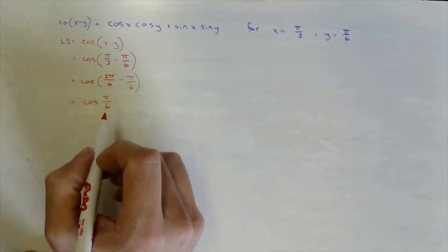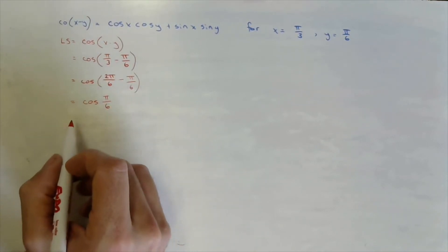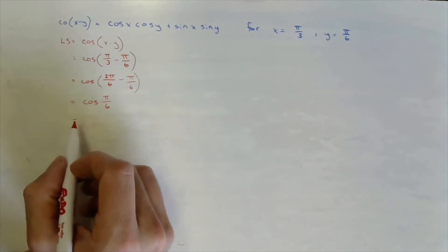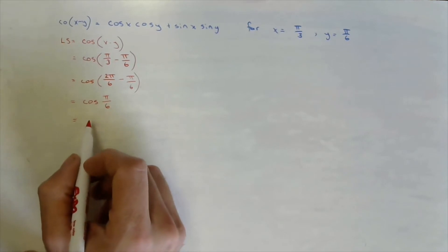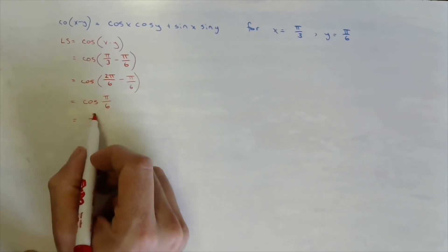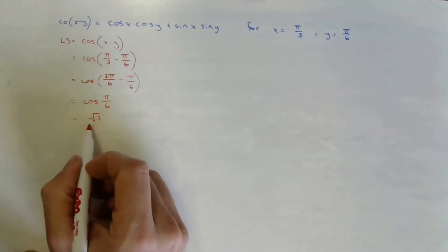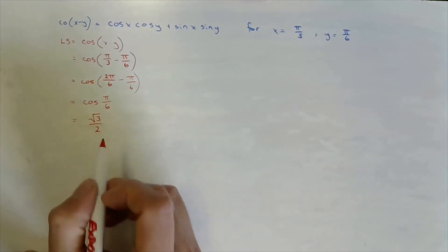Inside the bracket, 2 pi minus pi is pi, so we're left with the cosine of pi over 6, which we know from our unit circle is radical 3 over 2.